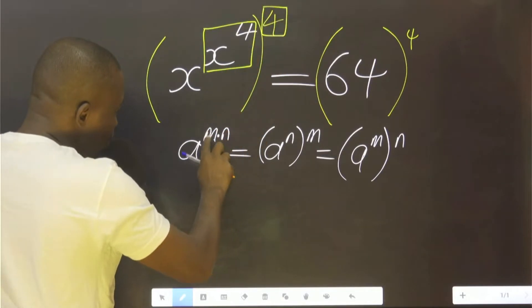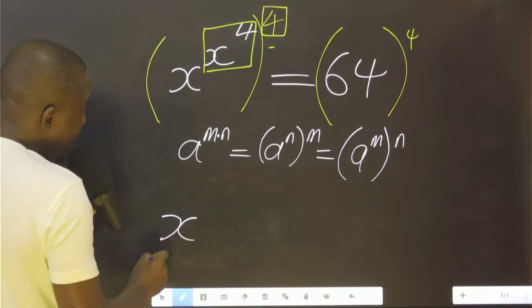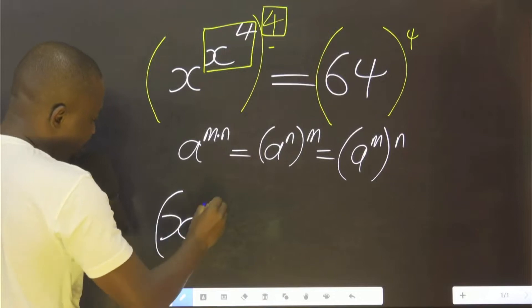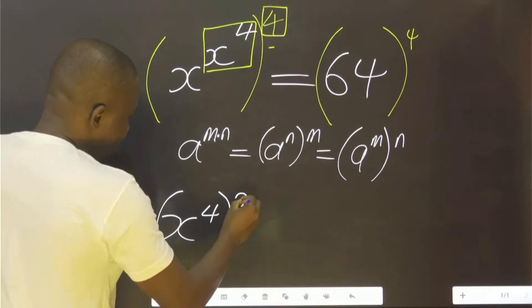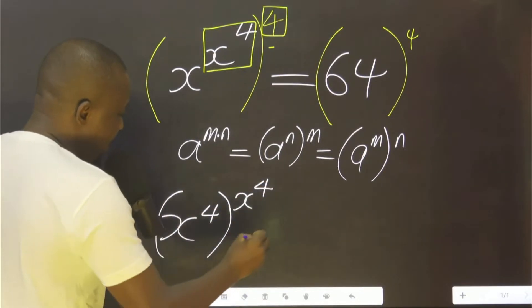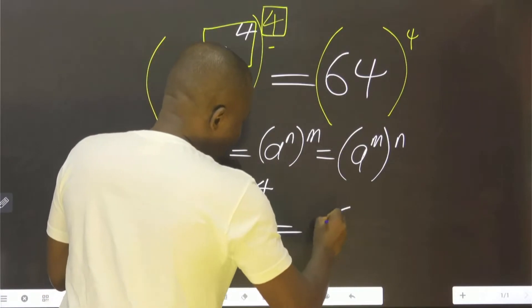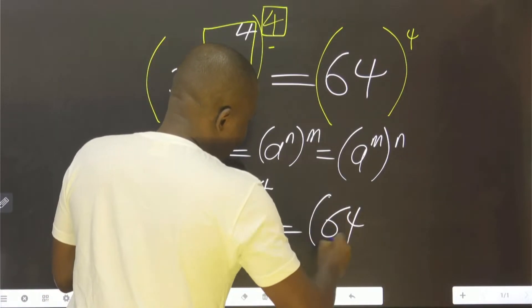The way we interchange these two, we can also interchange this by saying x raised to power 4 equals 64 raised to power 4.